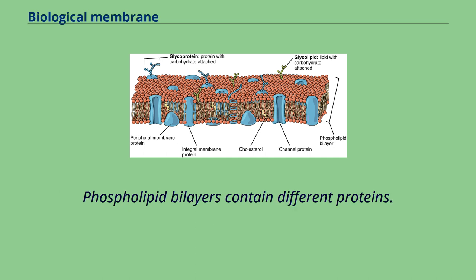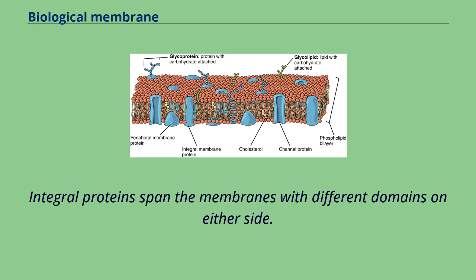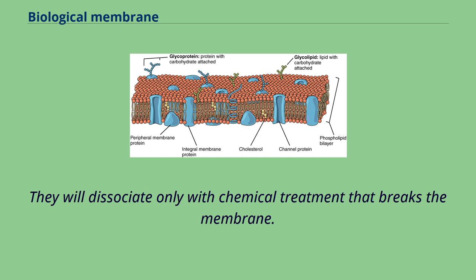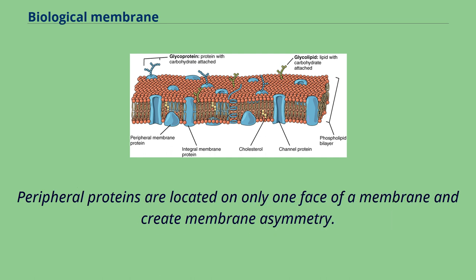Phospholipid bilayers contain different proteins with various functions. Integral proteins span the membranes with different domains on either side, hold strong associations with the lipid bilayer, and cannot easily become detached — they will dissociate only with chemical treatment that breaks the membrane. Peripheral proteins, unlike integral proteins, hold weak interactions with the surface of the bilayer and can easily become dissociated from the membrane. Peripheral proteins are located on only one face of a membrane and create membrane asymmetry.